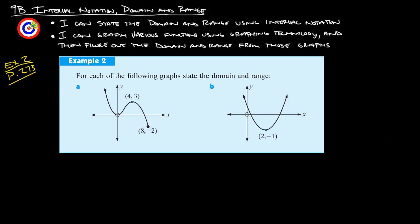Example two from page 273 says, for each of the following graphs, state the domain and range. So this one here, if you'll notice, the arrow goes on, so it goes to the left and up forever, but it actually stops over here, there's no end arrow over there.